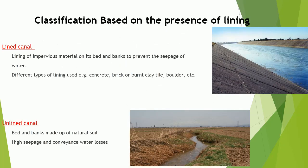Classification based on the presence of lining: there are two types. Lined canal — a lining of impervious material is provided on its bed and banks to prevent the seepage of water. Different types of lining materials used are concrete, brick or burnt clay tile, boulder, etc. Unlined canal — the canal in which bed and banks are made up of natural soil; high seepage and conveyance water losses are present in them.